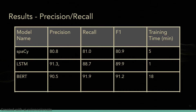Here's a table showing our results. Overall, BERT had the best performance, but it also took considerably longer to train. The LSTM had surprisingly good performance considering it only had one minute of training time. And finally, spaCy did the worst, but served as a good baseline model to get the project going.